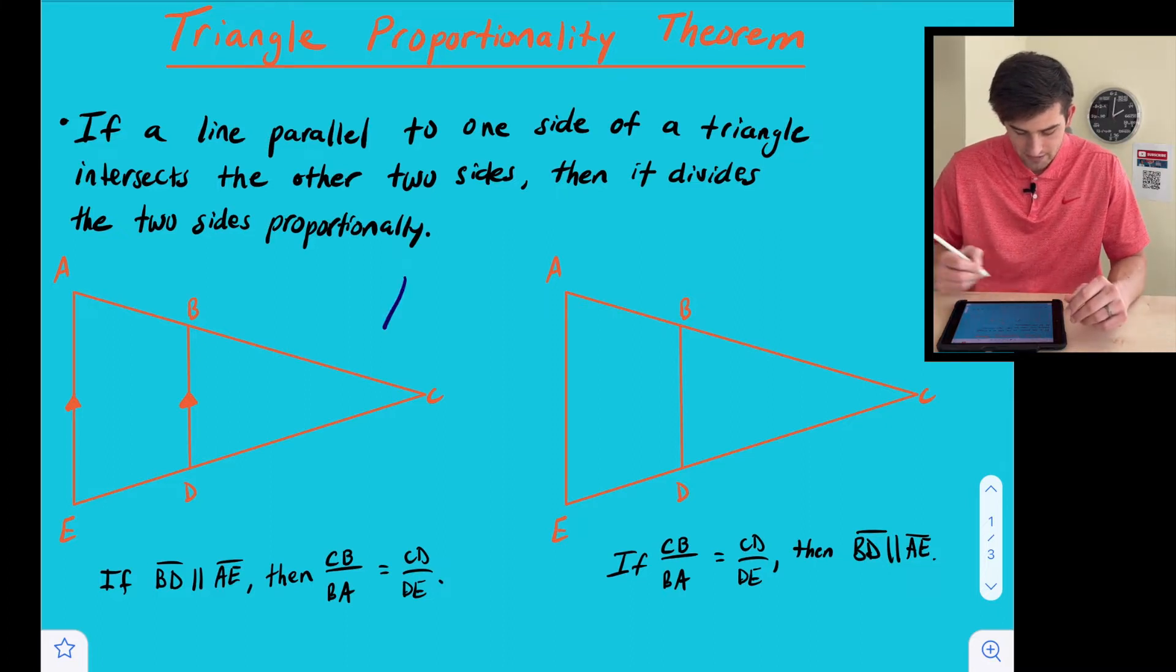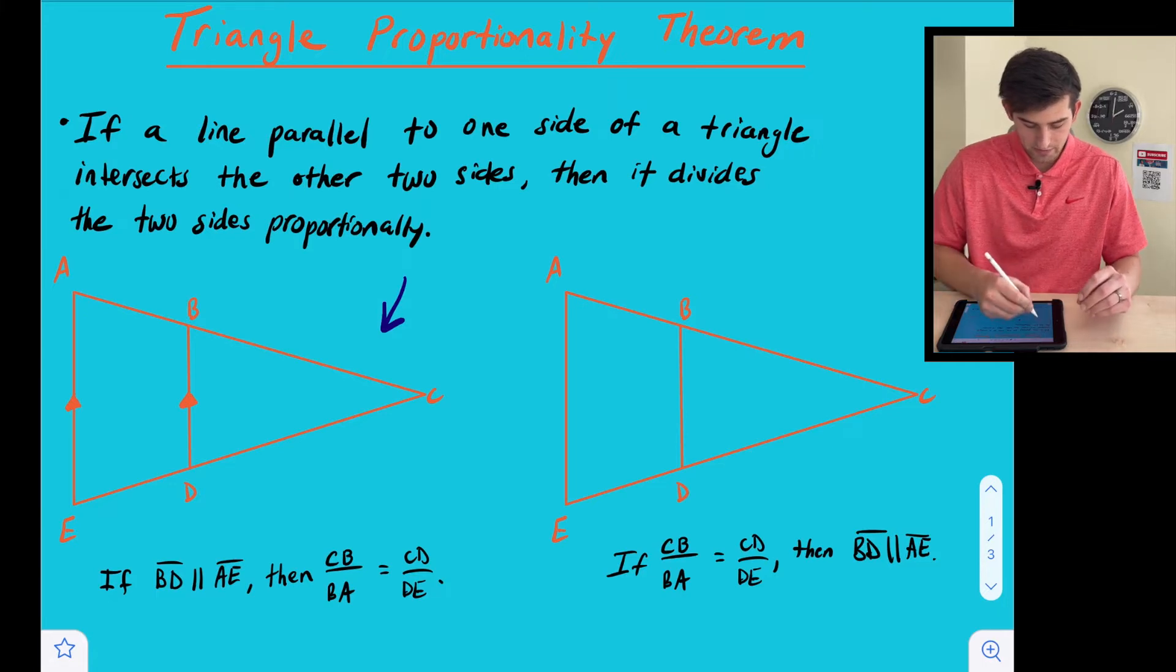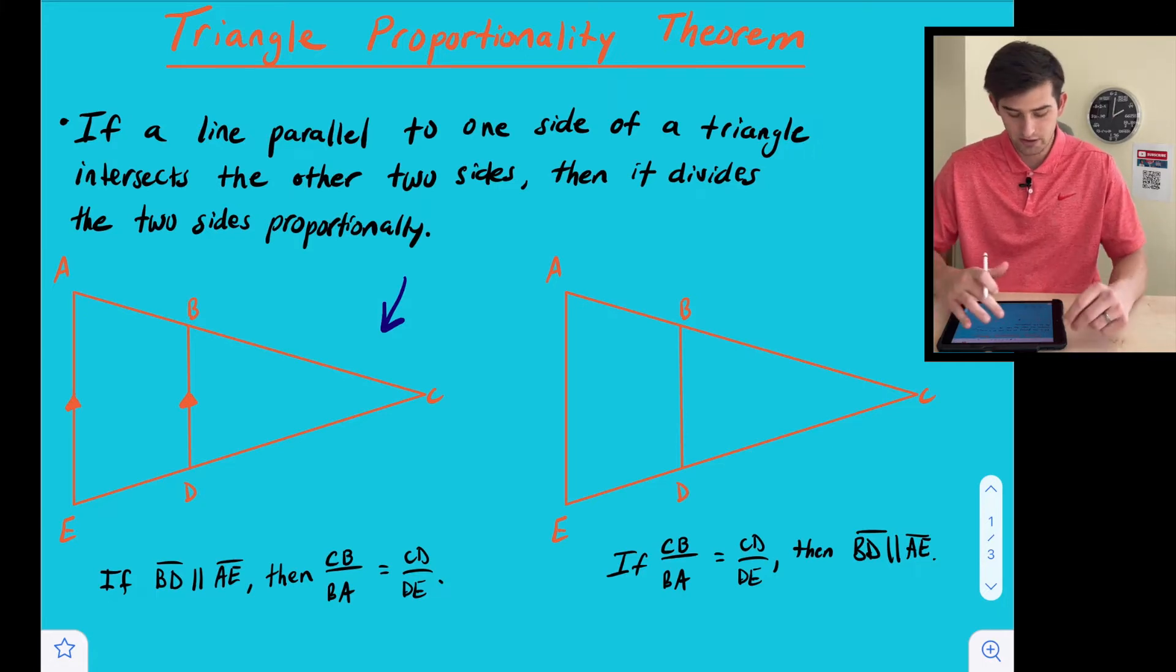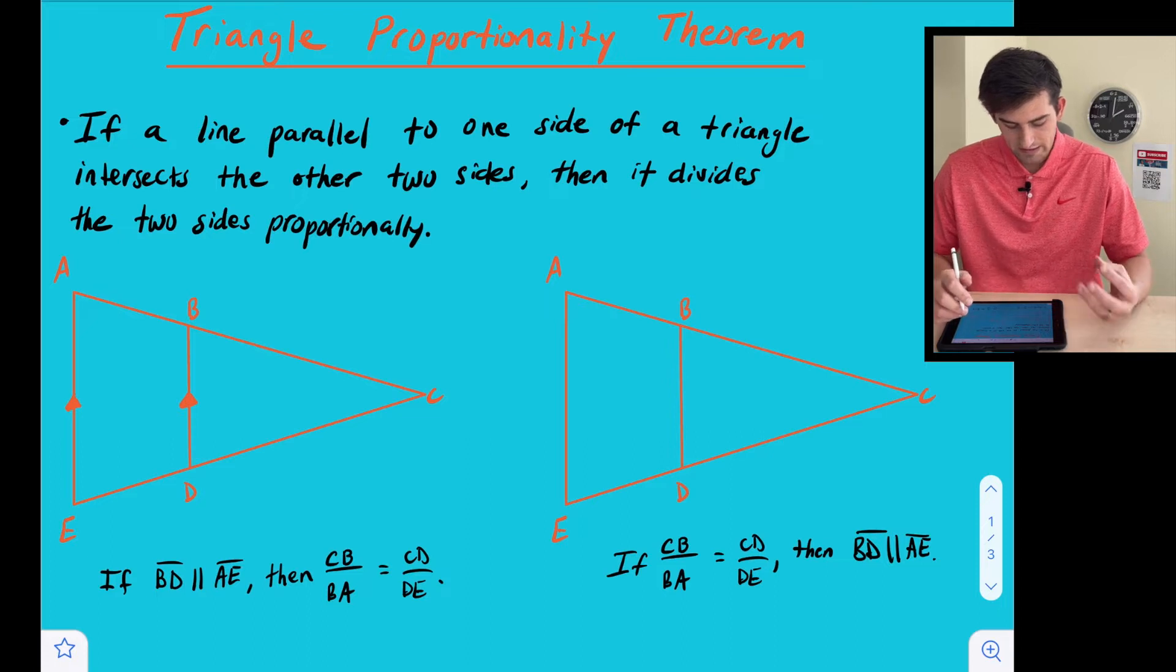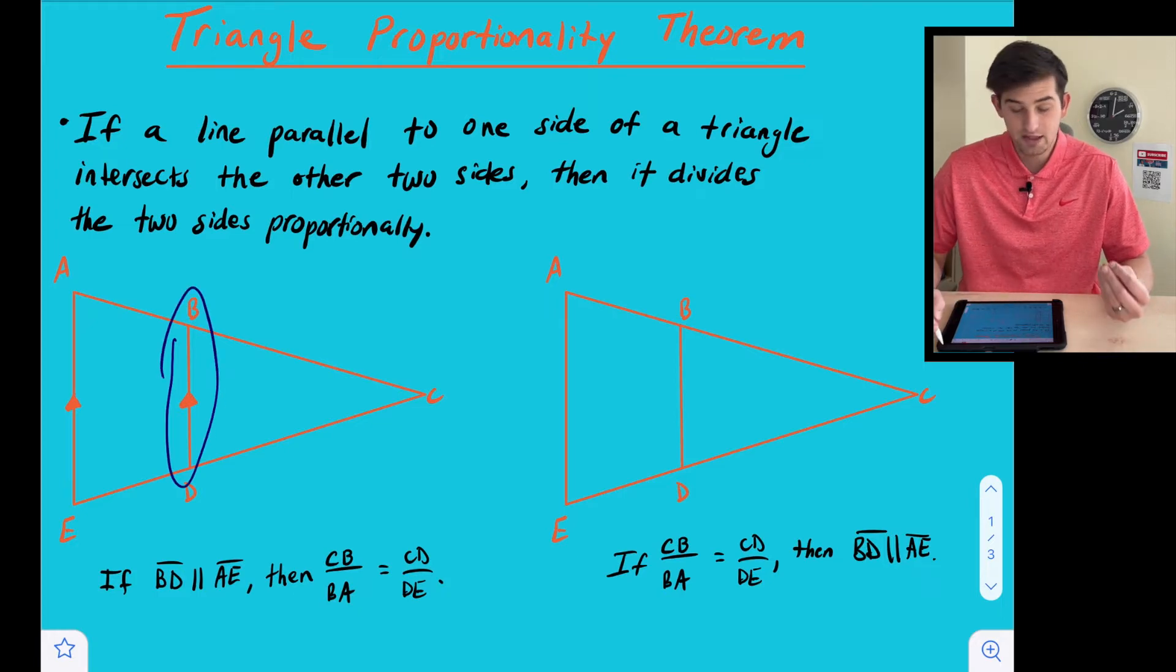So over here on the left side of the screen, we see this big triangle ACE and notice we also have BCD, kind of a smaller triangle. So what it's telling us here: if a line parallel to one side of a triangle, so here's the line we're talking about, intersects the other two sides.